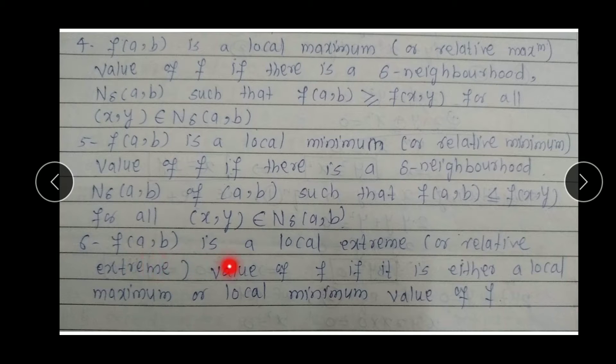F(A,B) is a Local Extreme or Relative Extreme value of F if it is either a local maxima or local minimum value of F. If F(A,B) is either a maximum or minimum value, then F(A,B) is called a local extreme value.